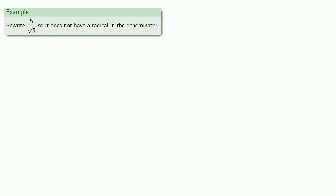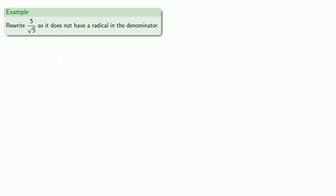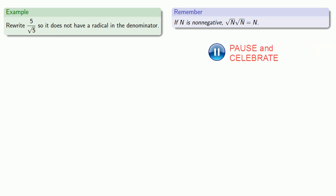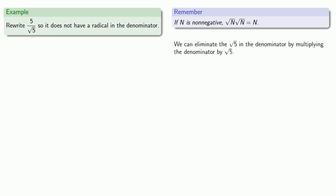Let's try to rewrite 5 divided by square root of 5 so it does not have a radical in the denominator. One of the things we know about getting rid of the square root is that if n is non-negative, the square root of n times the square root of n equals n itself without the square root. So that means we can eliminate the square root of 5 in the denominator by multiplying the denominator by square root of 5.